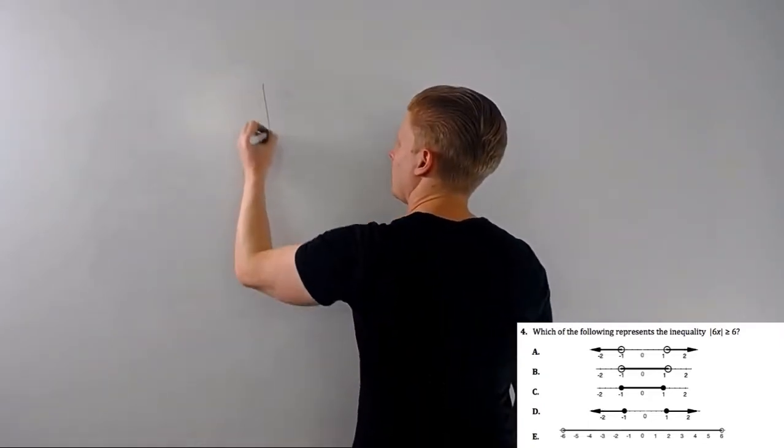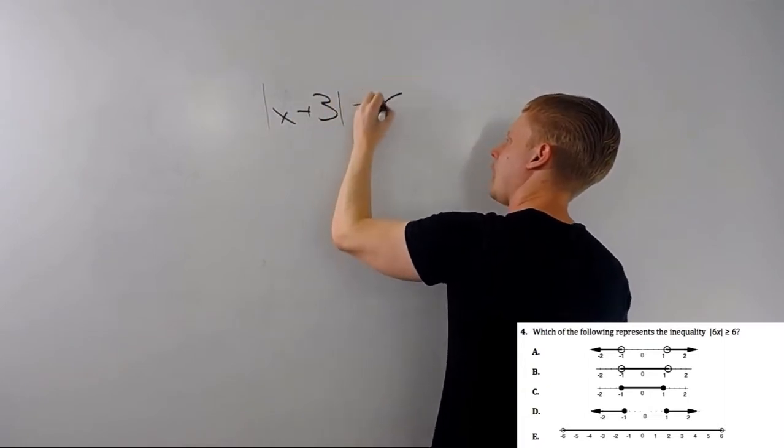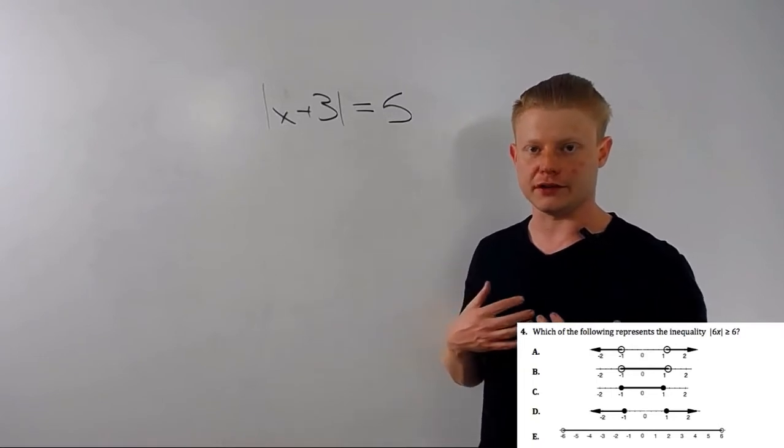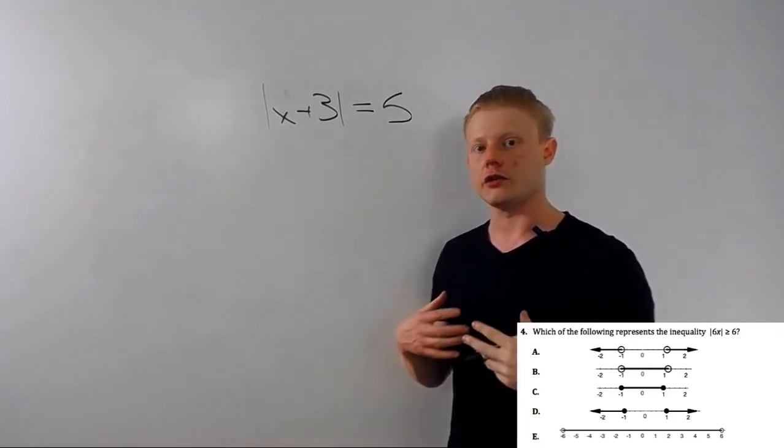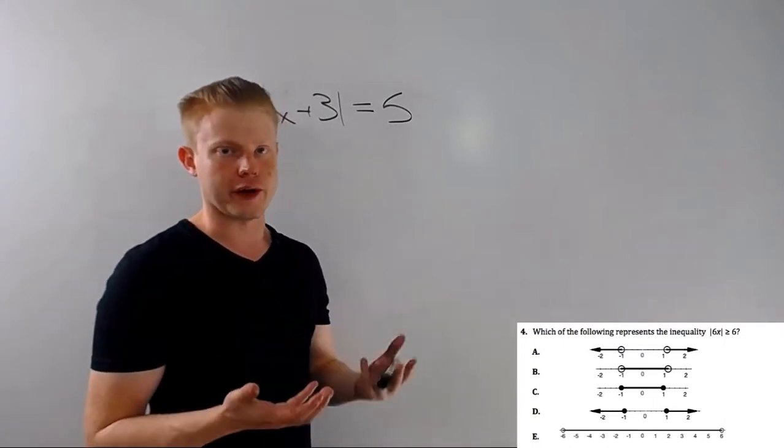So let's say I have an equation, absolute value of x plus 3 is equal to 5. Now in general, the absolute value equations aren't tested by themselves. It's generally wrapped into an absolute value inequality.